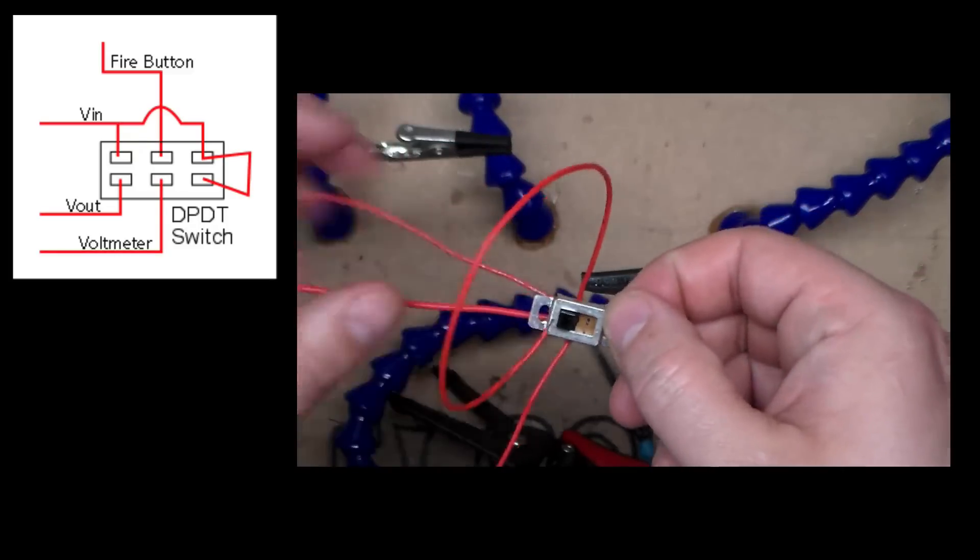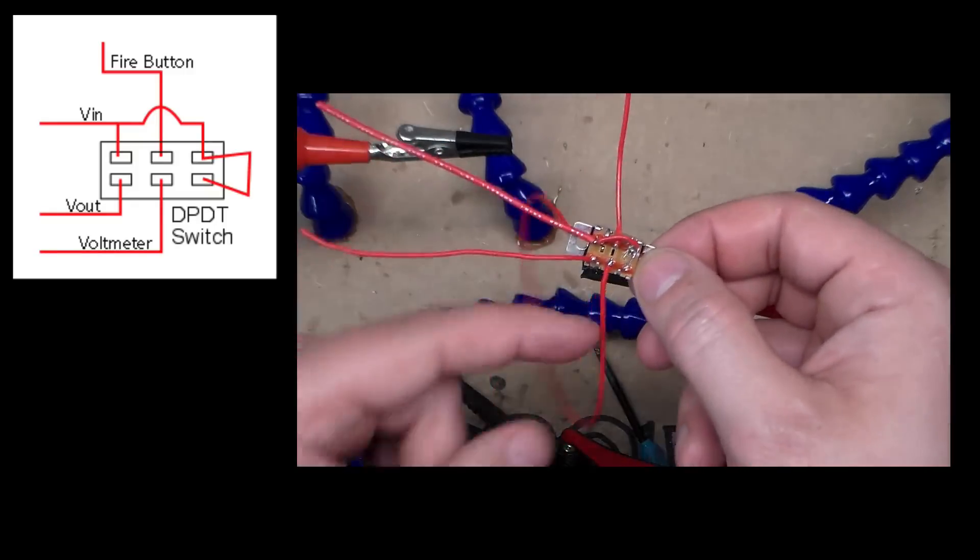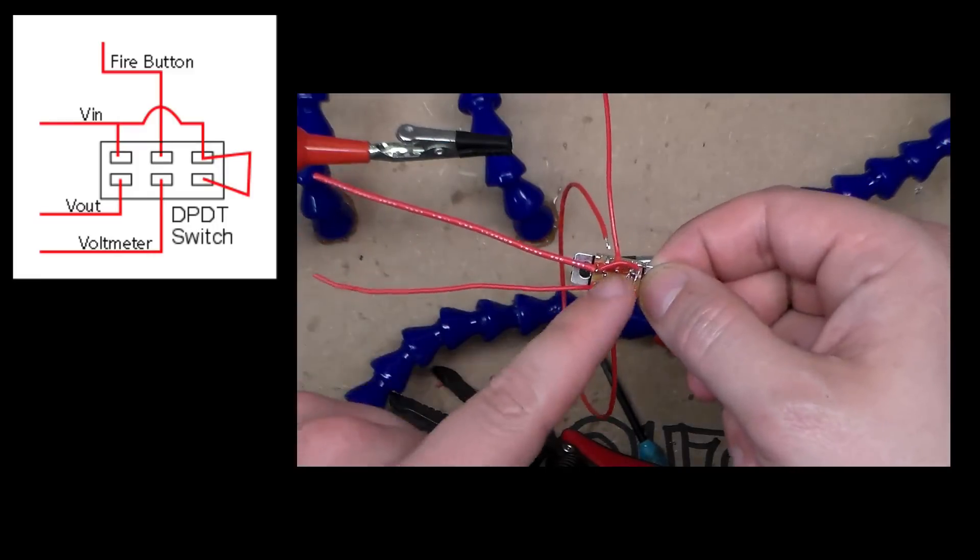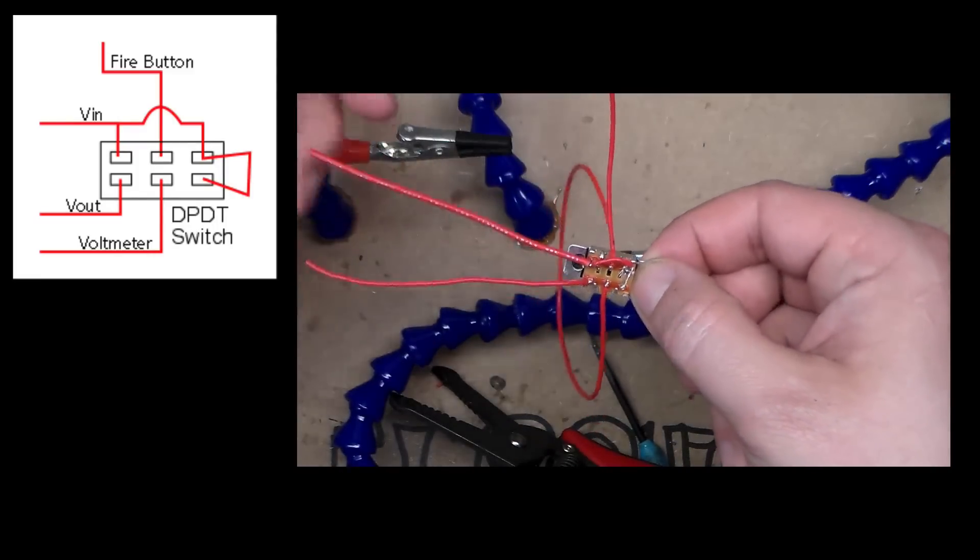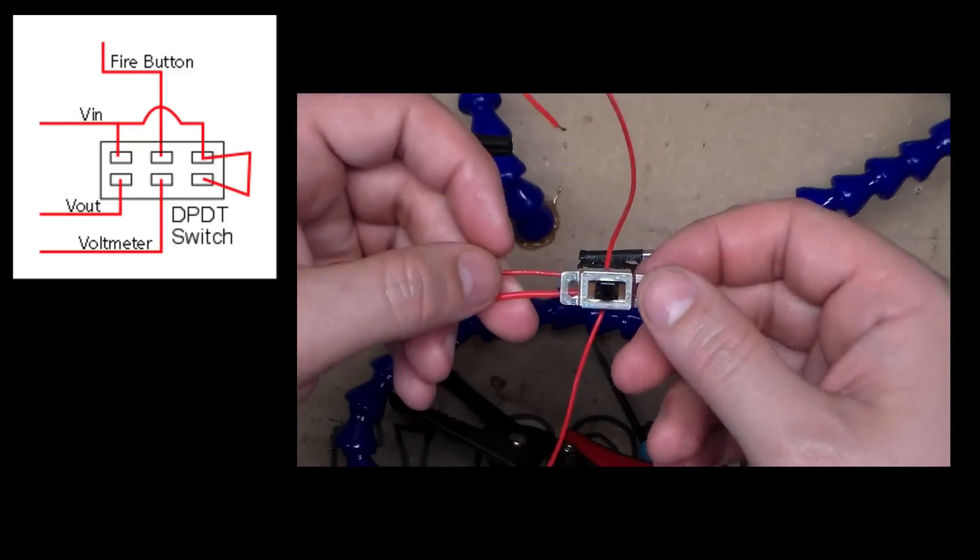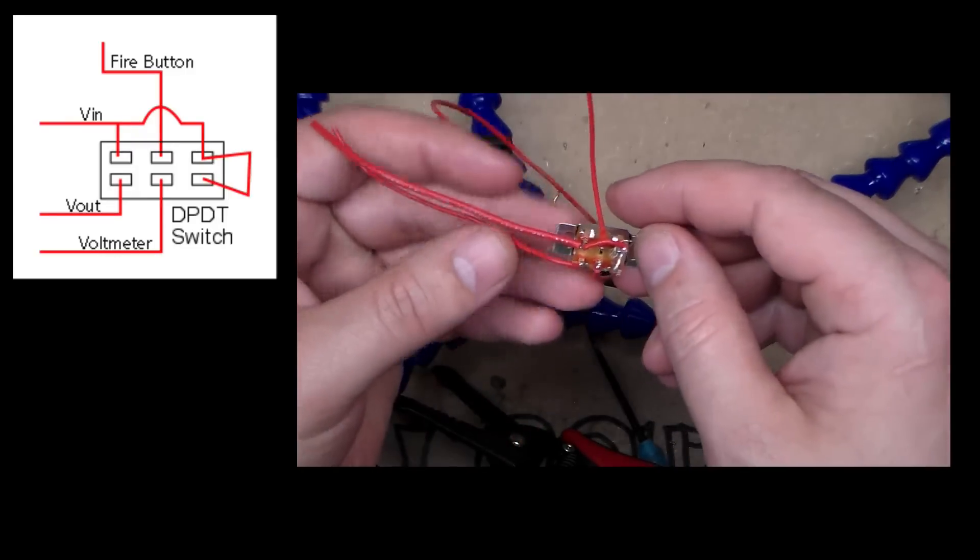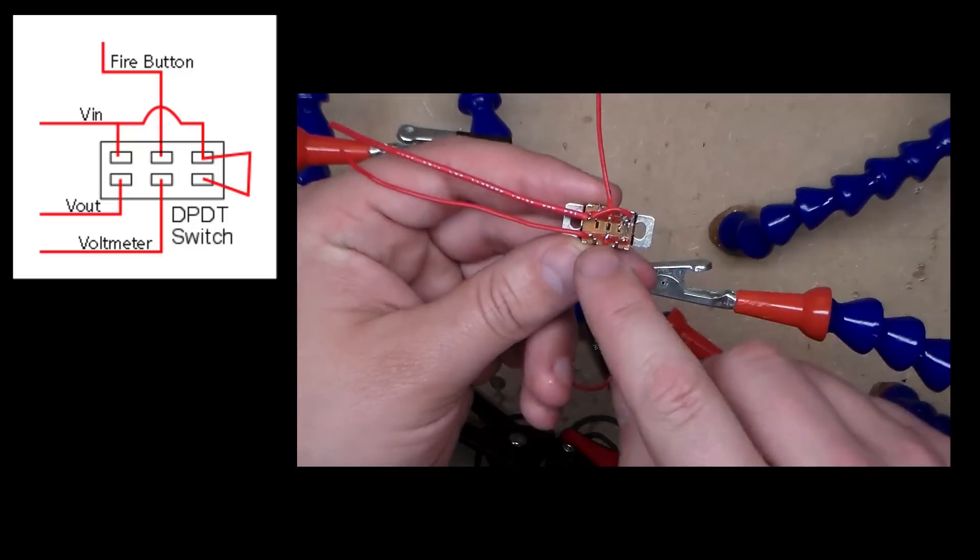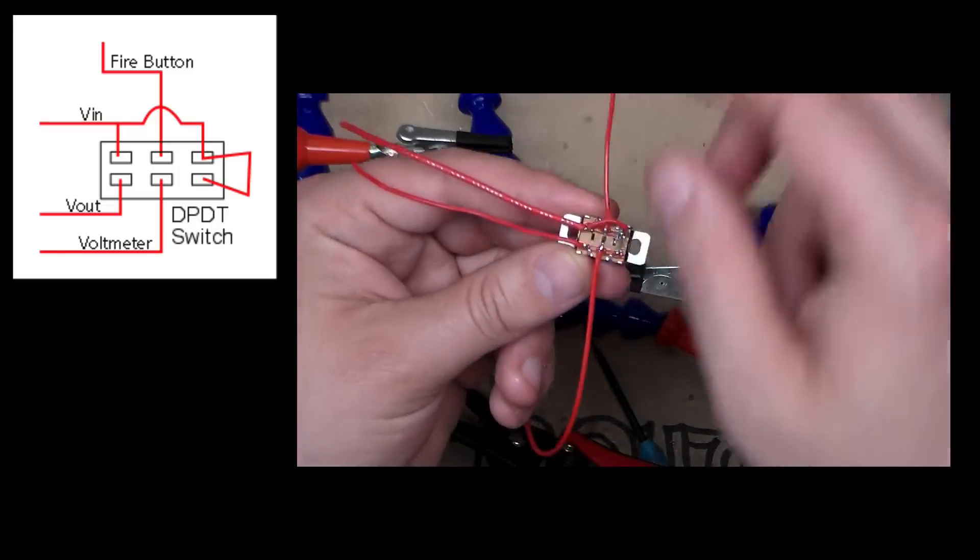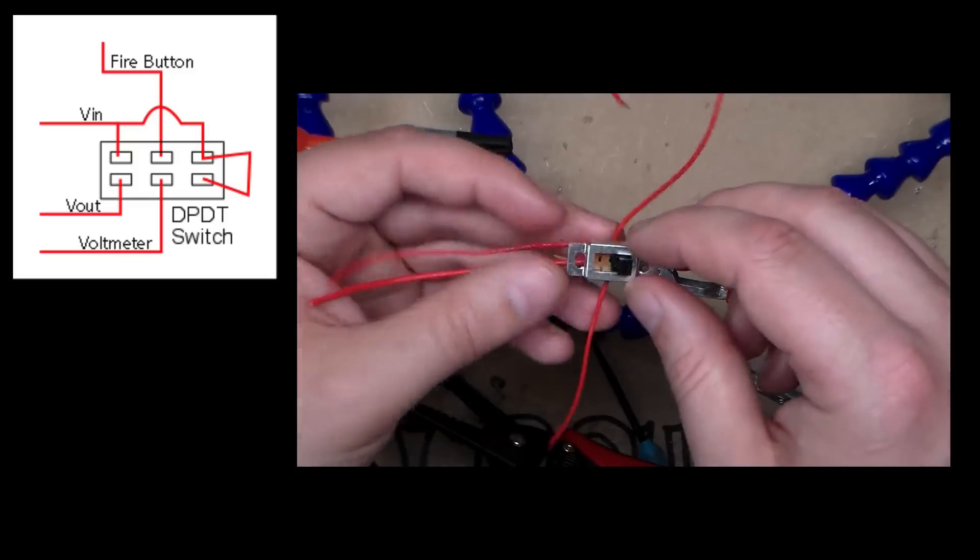So now if we go and flip this over, in the left position it would be voltage out, because that would be connecting this middle pin for the voltmeter to voltage out, and it would be connecting the input. In the middle position obviously it's locked out, it's off. And the right position would be voltage in, because it would be connecting the middle pin for the voltmeter to voltage input, and the fire button again still to voltage input. So that's kind of like the dual-purposeness of this switch.